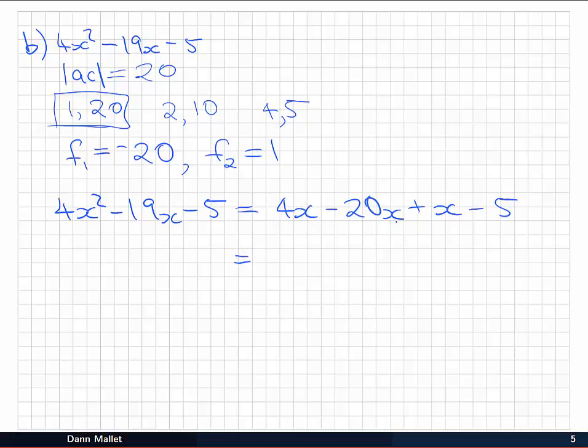And again we work through two terms at a time, factoring and grouping. We have a common factor of 4x in the first two terms, so we're left over with x - 5. Then we have +x - 5.